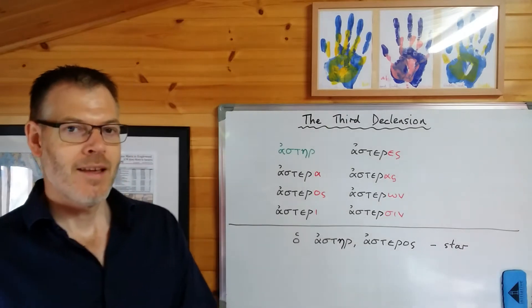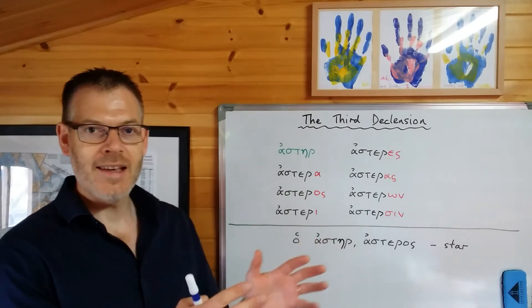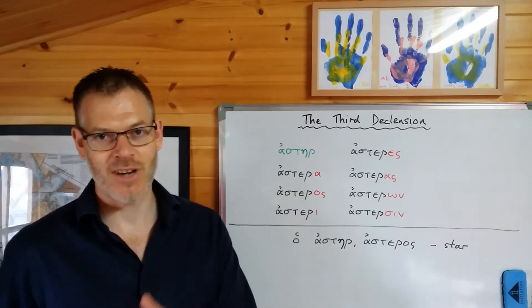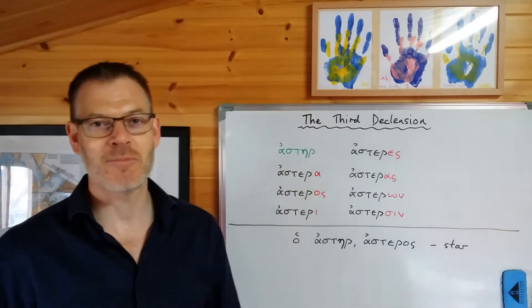And moreover, the third declension is actually the key to opening the way to progress in Greek, especially with understanding participles from chapter 14 onwards, and they're crucially important. So this is really worth persevering through.